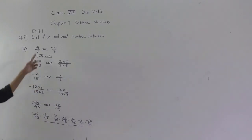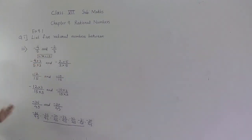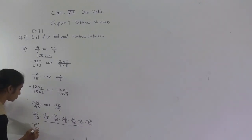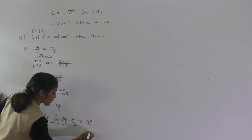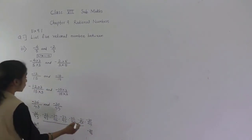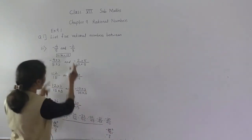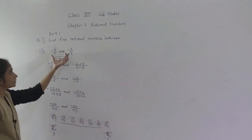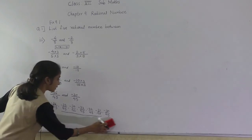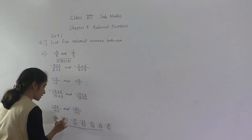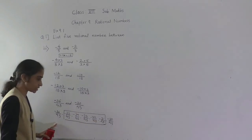You might ask whether these are really between minus 4 upon 5 and minus 2 upon 3. If you do the reduced term for minus 36 upon 45 — 9 fours are 36, 9 fives are 45 — you get minus 4 upon 5. And for minus 30 upon 45 — 15 twos are 30, 15 threes are 45 — you get minus 2 upon 3. So these 5 rational numbers are indeed between the two given rational numbers.